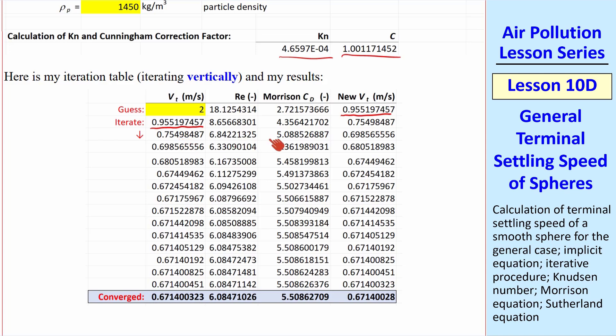new guess, Reynolds number, Cd, new vt, etc. And you can see that we have convergence to the fourth digit in less than 10 iterations.